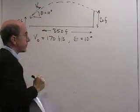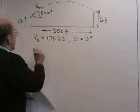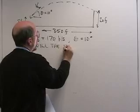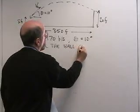So this is v0 is up here, this angle theta is equal to 10 degrees. All right, so the question is will the ball clear the fence?